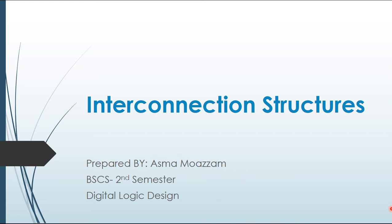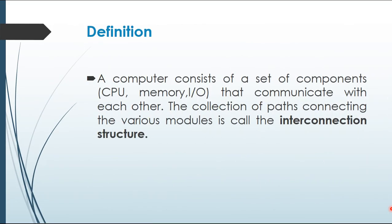Hello students! What are the interconnection structures? Let's see the definition. A computer consists of a set of components that communicate with each other. A computer has multiple components such as processor, memory, or input-output components. They communicate together. The collection of parts connecting the various modules is called the interconnection structure.